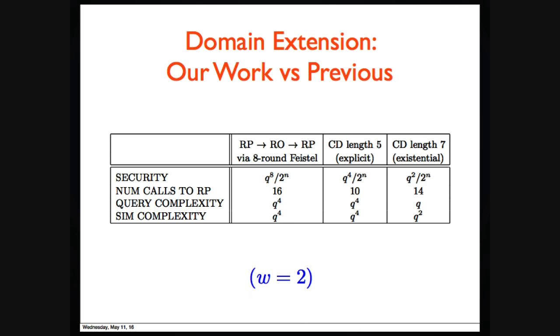This would be a summary of our result compared to previous works. It shows in the case when W equals 2. For the five round, it's explicit construction. For the seven round, the middle construction, the diffusion permutation with low conductance, we could only show its existence without construction. And that's the result. And also end of my talk. Thank you.